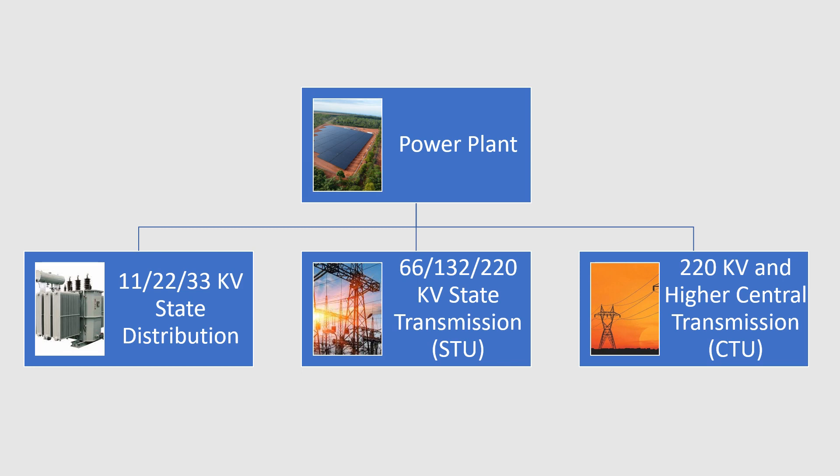Similarly, if the power plant size is slightly bigger — somewhere around 50 megawatts or up to 100 megawatts — these power plants are generally connected to the state transmission utility at a voltage level of around 66 kV, 132 kV, or 220 kV.